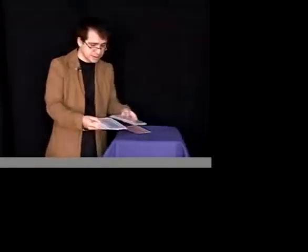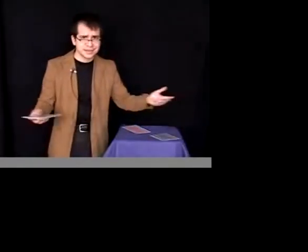So now you turn back to the spectator and you have them point to anyone they like. So let's say they point to this one. You set it down on the table. It's the king of diamonds.